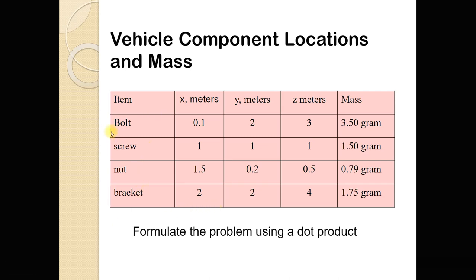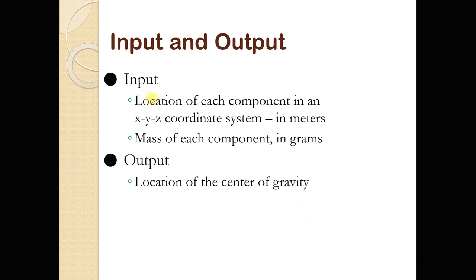So anyway, for each of these items, we know the x, y, and z coordinate and the mass of the item. So those are our inputs, the locations in x, y, z, and the mass, and our output is going to be the location of the center of gravity. Our output is going to be an x, y, z coordinate.